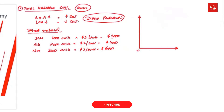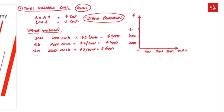On the x-axis we will plot the units, and on the y-axis we will plot the total cost. Units are 1,000, 2,000, 3,000 and so on. On the y-axis: $2,000, $4,000, $6,000, $8,000 and so on. Plotting values for January first: for 1,000 units the total cost is $2,000.